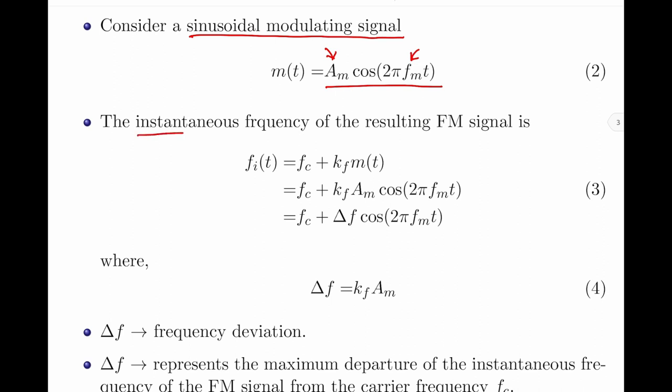So, the instantaneous frequency fi(t) of the frequency modulated signal can be given by the expression fc plus kf into m(t). I would like you to note that this is derived in my previous video. Let me now substitute m(t) from equation 2 into this part of the equation. So fi(t) becomes fc plus kf into am multiplied by cos(2π·fm·t). Let me now write the product of kf and am as delta f.